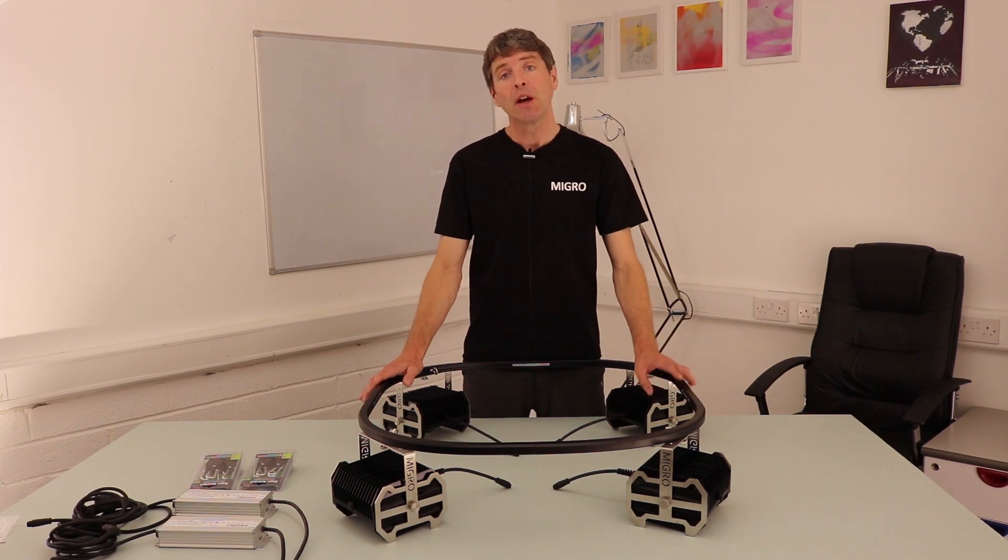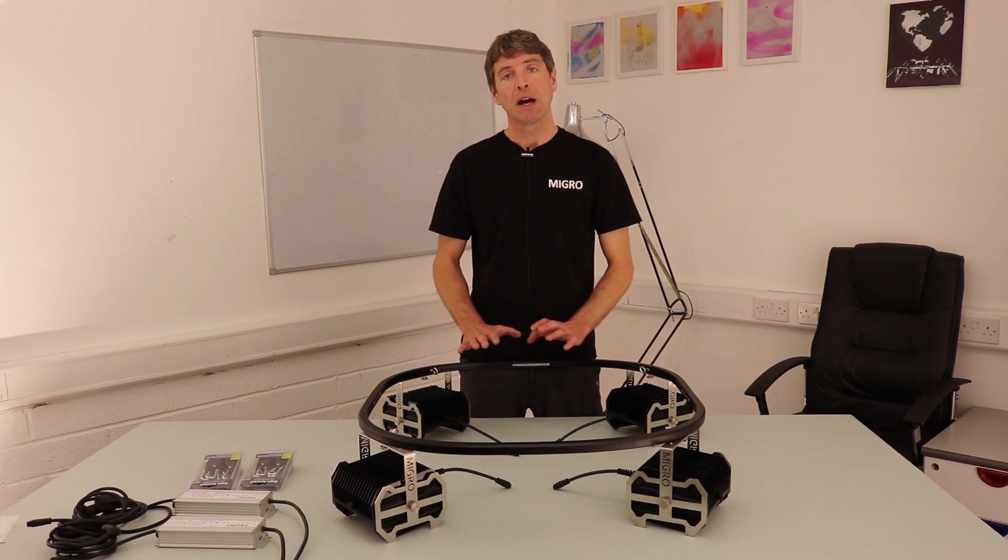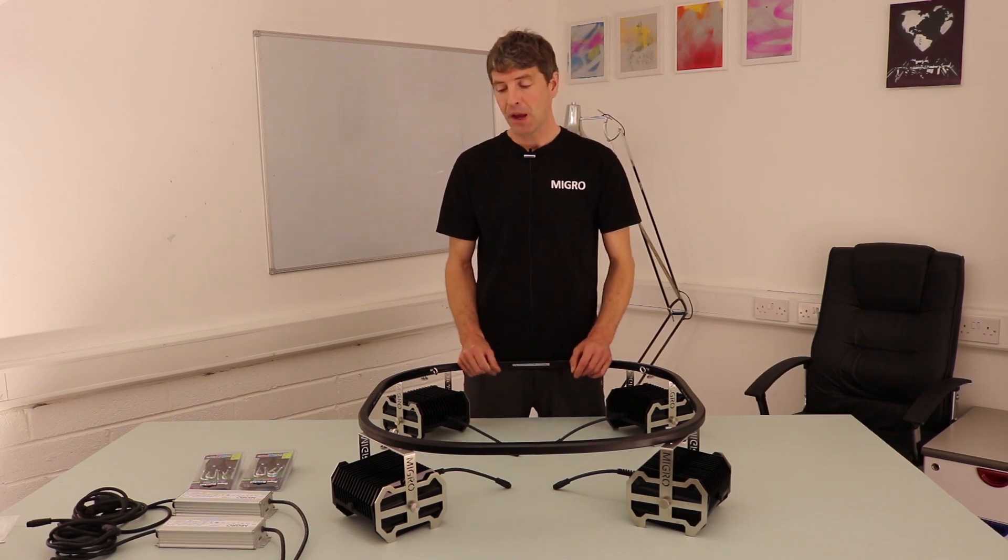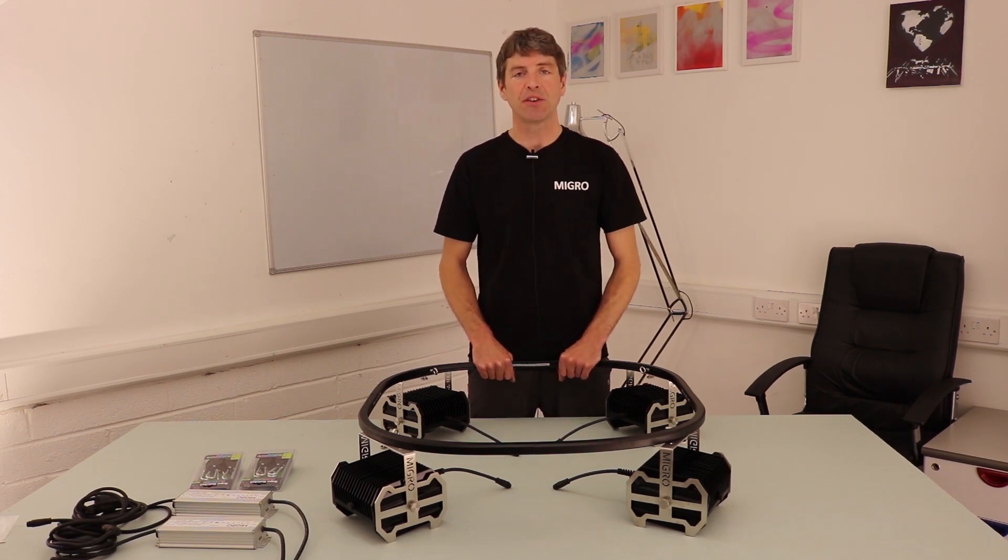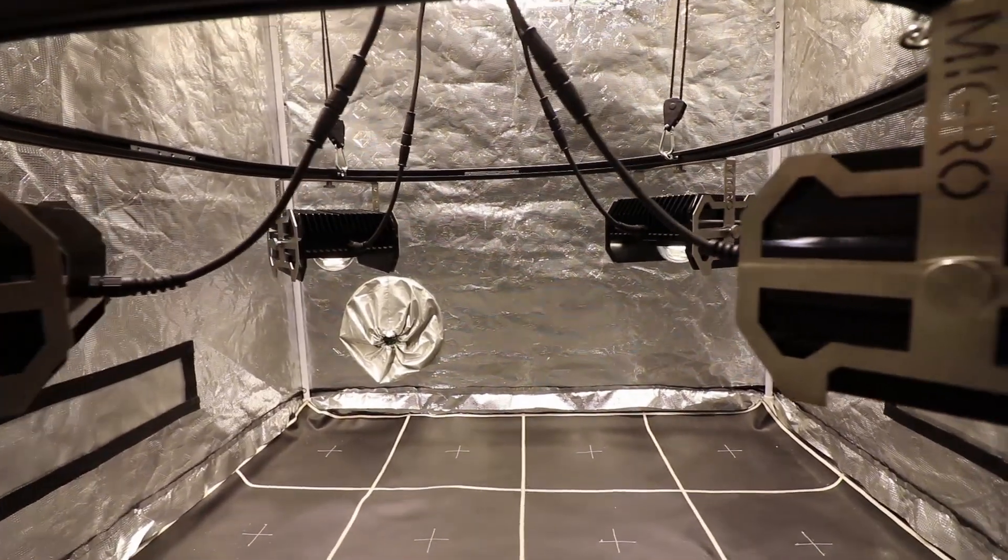The MIGRO 400 beats a 600 watt HPS for power output and also gives a much better light distribution in canopy penetration. And you get a 40% reduction in electricity consumption and over 50% reduction in heat output from this system.